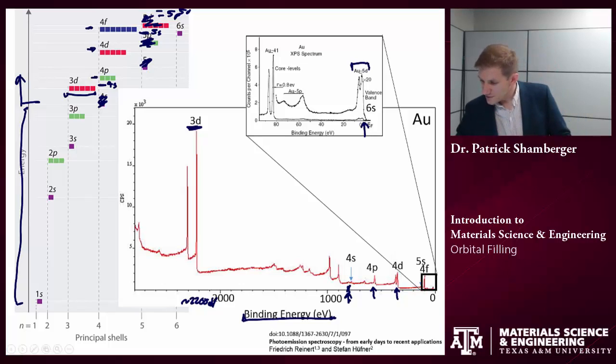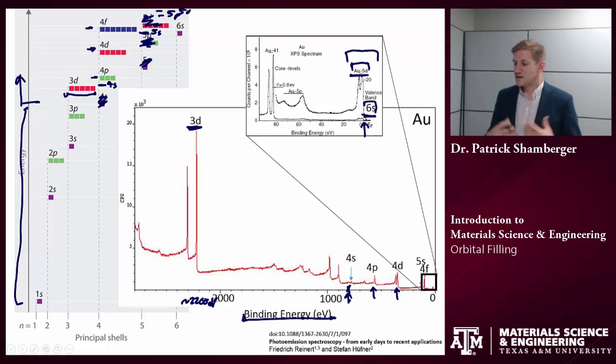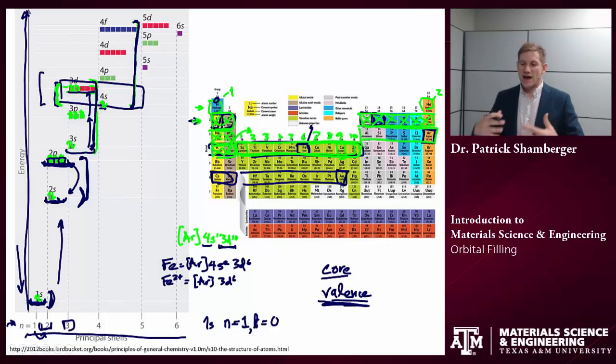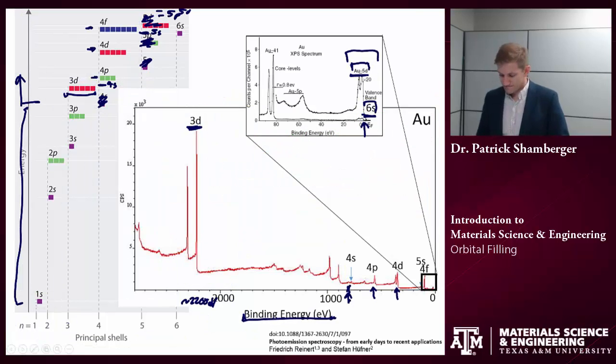If I look at very small binding energies, these are very weakly bound electrons, I see a combination of 5d and 6s electrons. So in gold, this is what I call the valence band. These are the least tightly bound electrons, and it's composed of a combination of 5d and 6s electrons. If we jump back to our periodic table, this makes sense, because we have 5d electrons and 6s electrons, and these are the highest energy level electrons.